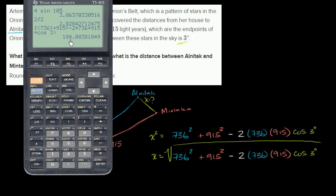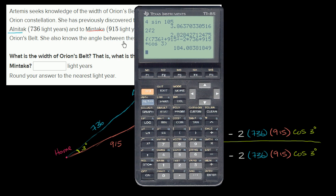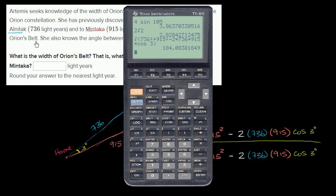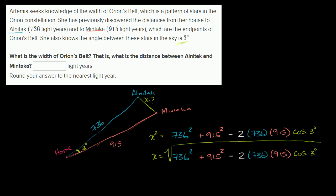x is 100 if we round... Let's see, what do they want us to do? Round your answer to the nearest light year. So to the nearest light year it's going to be 184 light years. So x is approximately equal to 184 light years. So it would take light 184 years to get from Mintaka to Alnitak.